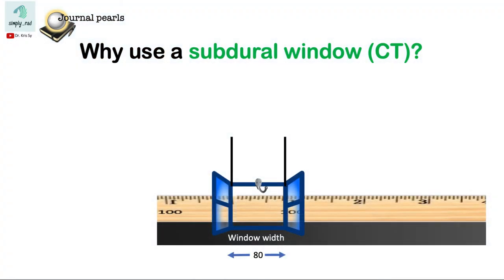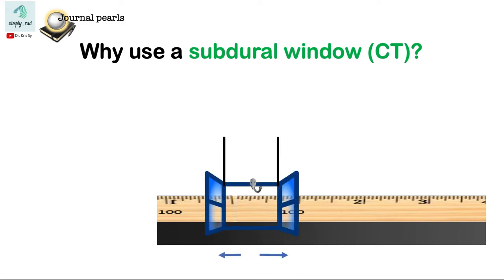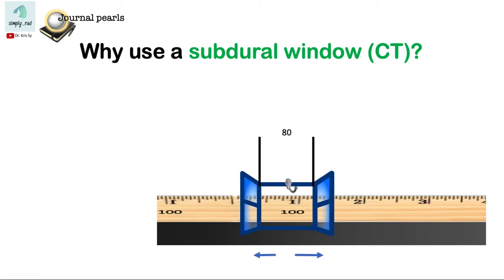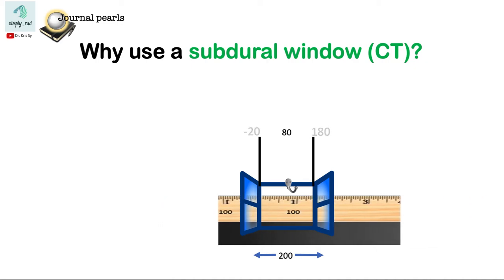So what we do here is that instead of the brain window with a width of 80 centered at 40 Hounsfield units, we're going to slide it up to a center of 80 and set a wider width of 200. Now the range of Hounsfield units are changed. It's 80 minus the half of 200 which is minus 20, while 80 plus the half of 200 is 180.